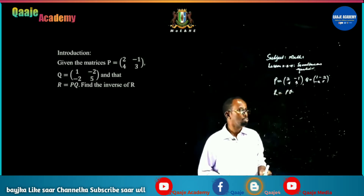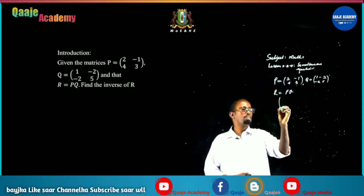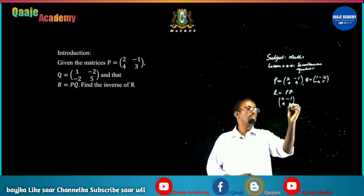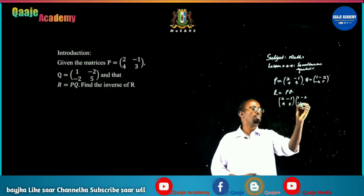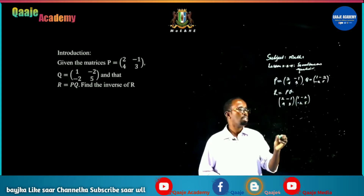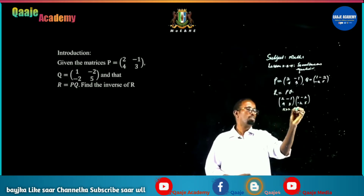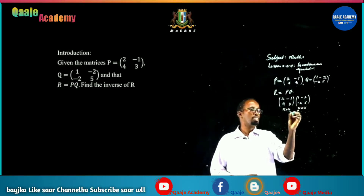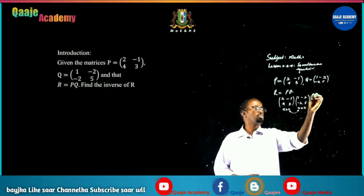So R is equal to PQ. We multiply P and Q together: [2, -1; 4, 3] times [1, -2; -2, 5]. Both are order 2 by 2. The column of the first is the same as the row of the second, so we multiply these two together.